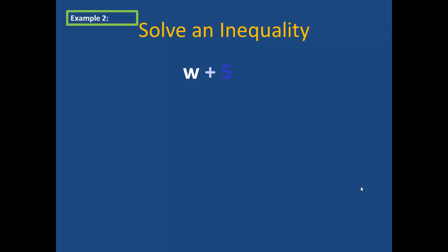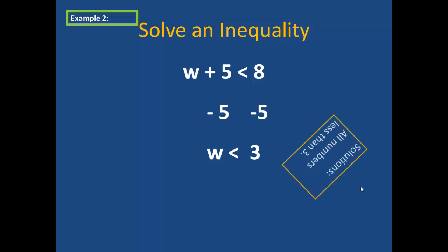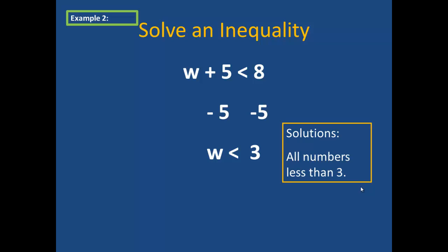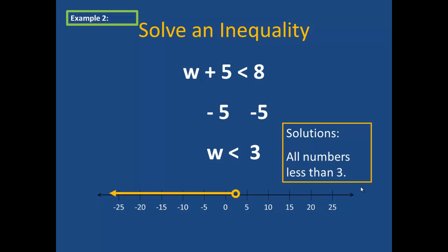In example 2, we look at the problem w plus 5 is less than 8. To solve this inequality, we subtract 5 from each side, which yields w is less than 3. This means that our solutions are all numbers less than 3. To graph this on the number line, we start by putting an open point at 3 and an arrow pointing to the left because we are interested in all numbers that are less than 3.